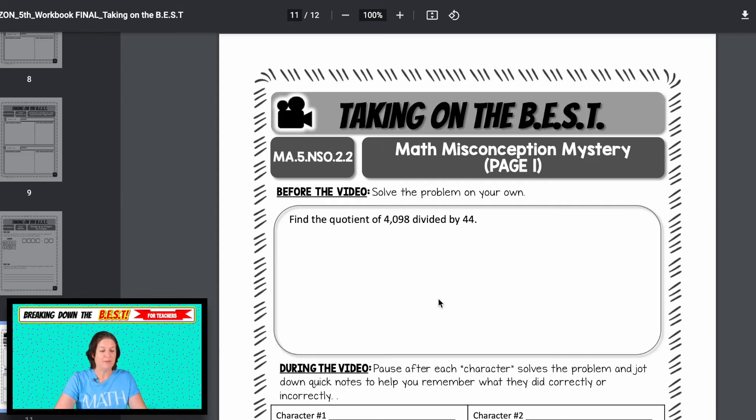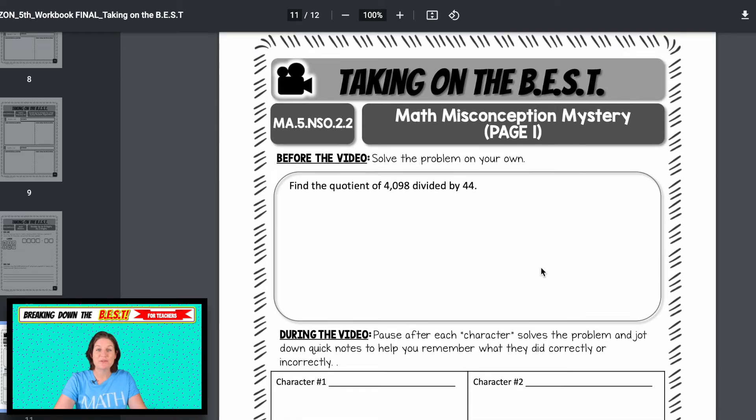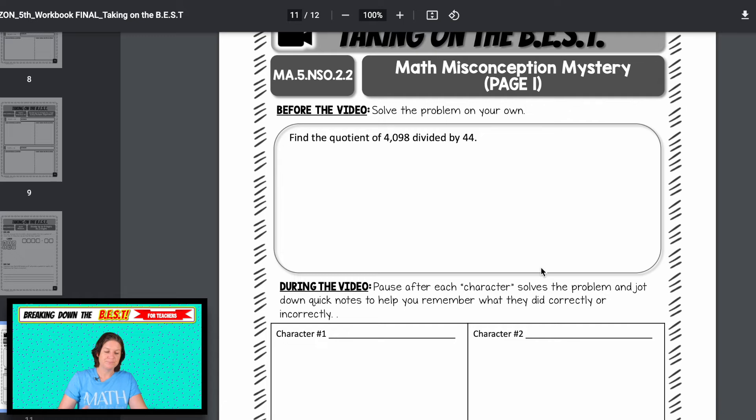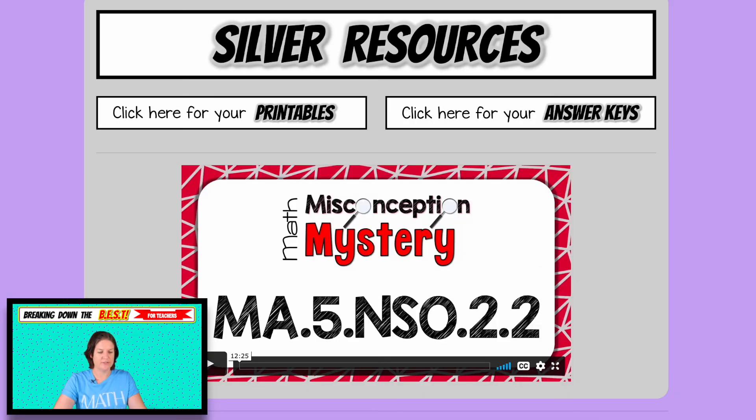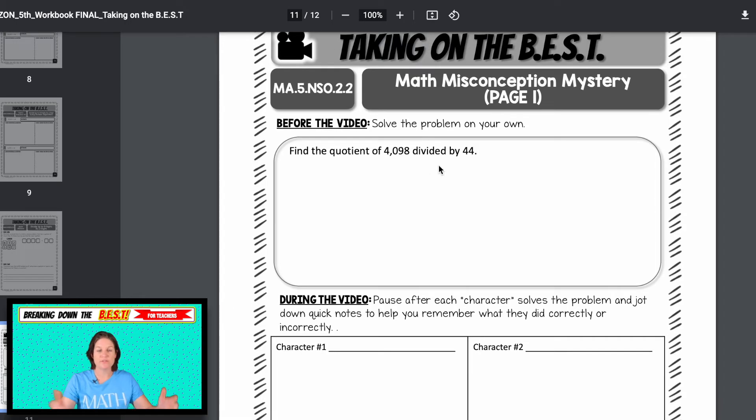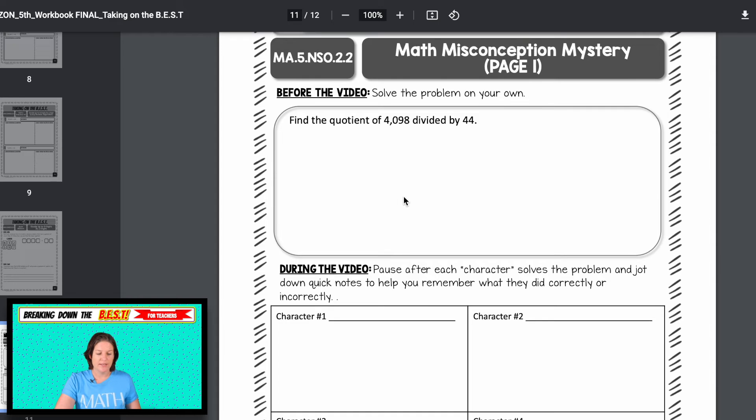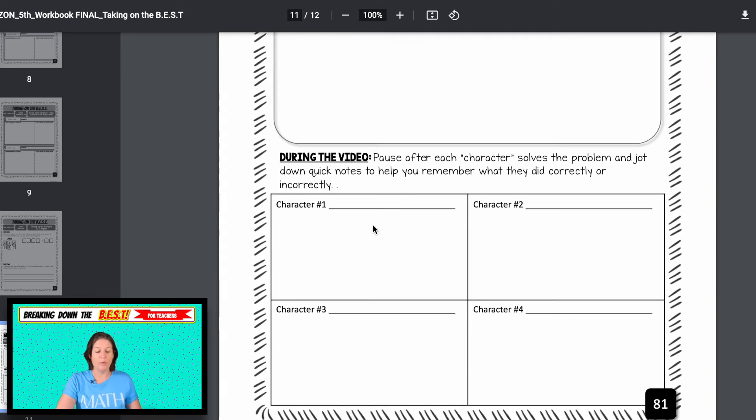So there's explanations, there's some more error analysis, but the mega error analysis video is with the math misconception mystery. I showed you where the video was, it's right here, but this is the printable that goes with it. So first the video walks them through the whole process, but first your students would solve this problem either independently or with group or teammates. And then they will watch as four other characters in the video, which are me dressed up as silly characters, they'll watch as those four characters explain their work.